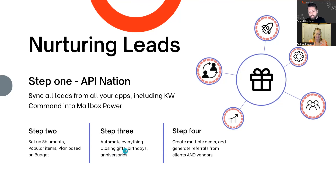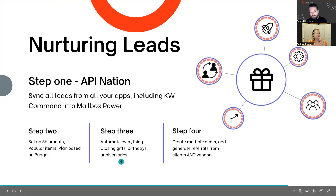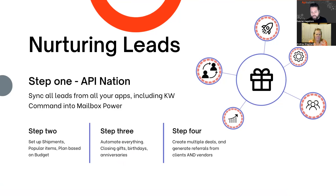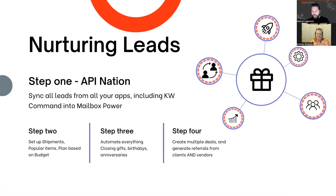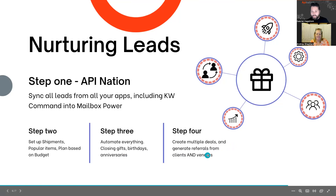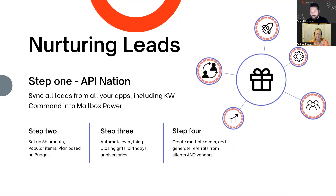You can automate everything — closing gifts, birthdays, and anniversaries. If you have that information from KW Command, it can be synced over to Mailbox Power and those people will automatically get birthday gifts and anniversary gifts, which is charming and helps you stay top of mind on those important days. Once you have awesome shipments automated, step four kind of just happens naturally: you're going to create multiple deals from the customers you've worked with in the past. You can put not just clients and leads into the system, but all the other people you work with — painters, plumbers, the mortgage guy, insurance.